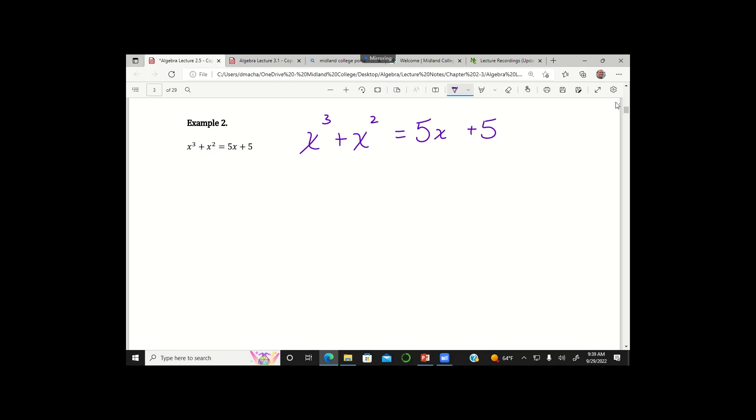Still, just like a quadratic equation, the strategy remains that I'm going to try to collect all of my terms on one side of the equation and just let the other side of the equation just be zero. So I could rewrite this as x cubed plus x squared minus 5x minus 5 equals zero. That way the right hand side is zero.